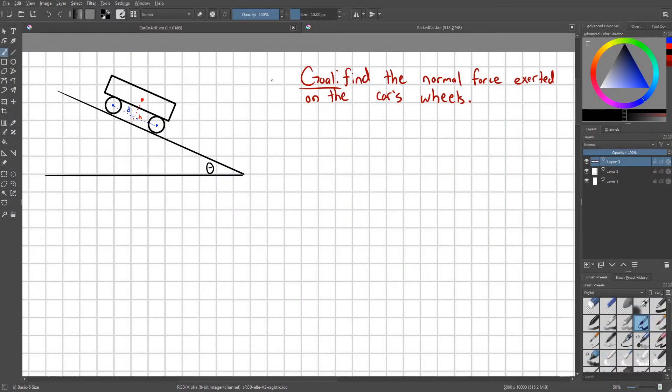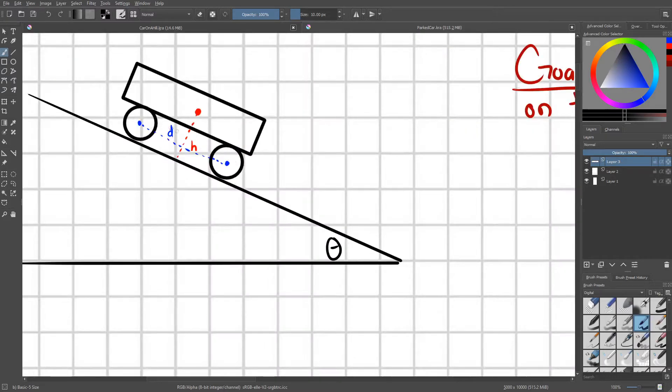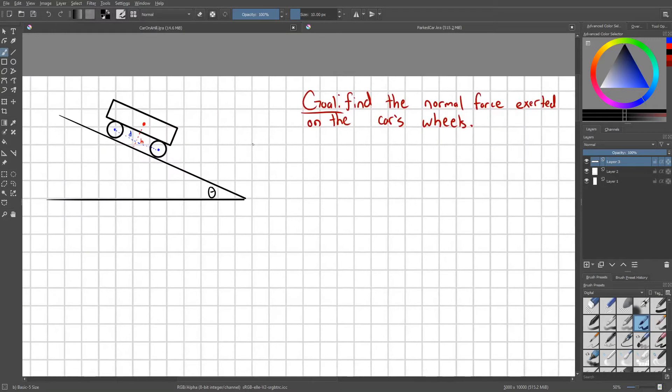Hey everyone, today we're going to be looking at another torque problem, and the goal of this problem is fairly simple. We have a parked car with the following parameters. It has a distance d between its wheels, and its center of mass is located a height h above the ground. The goal of the problem is to find the normal force exerted on the car's wheels if it's resting on a slope of angle theta.